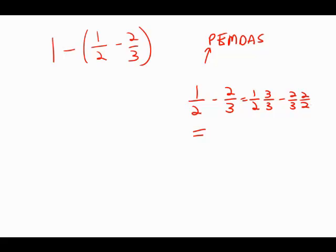So one-half times three over three, that would be three over six. Minus two-thirds times two over two, that would be four over six. Three over six minus four over six is negative one-sixth. So now I'm going to go back to the original.